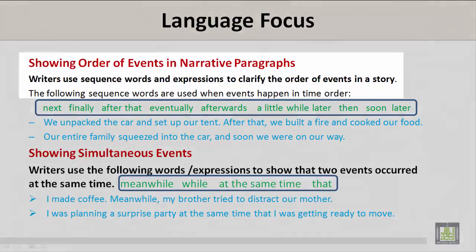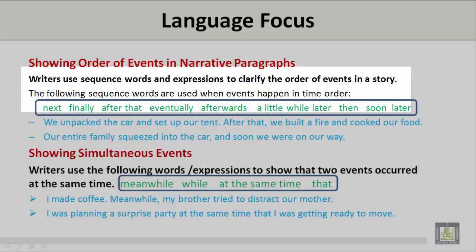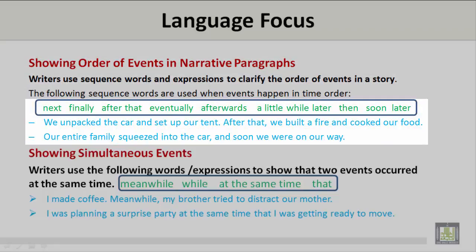Language Focus: Showing Order of Events in Narrative Paragraphs. Writers use sequence words and expressions to clarify the order of events in a story. The following sequence words are used when events happen in time order: next, finally, after that, eventually, afterwards, a little while, later, then, soon, and later.